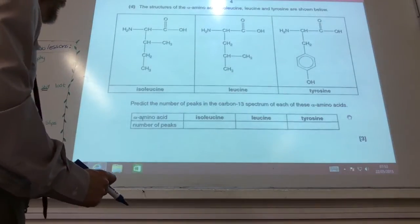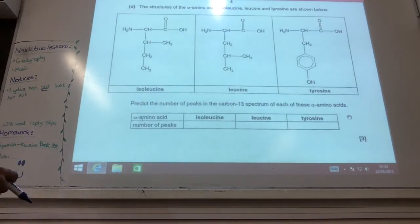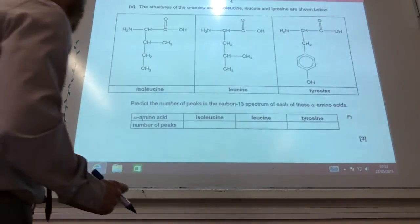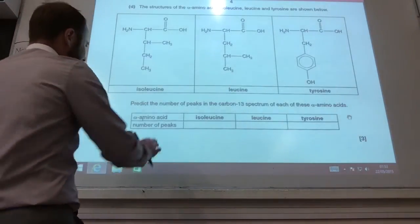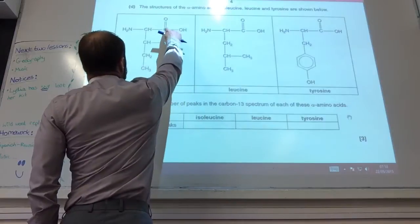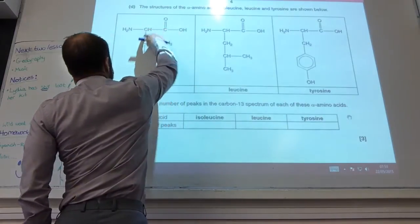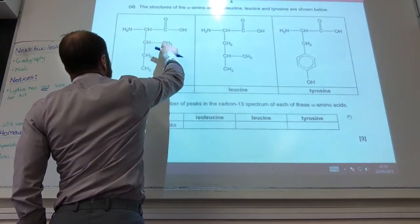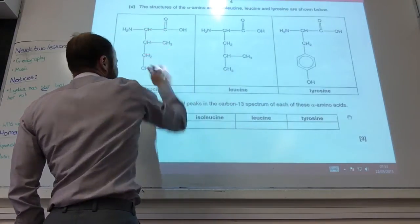Now for some NMR — predict the number of peaks. Going through this molecule: one, two, three, four, five, six. They're all different.